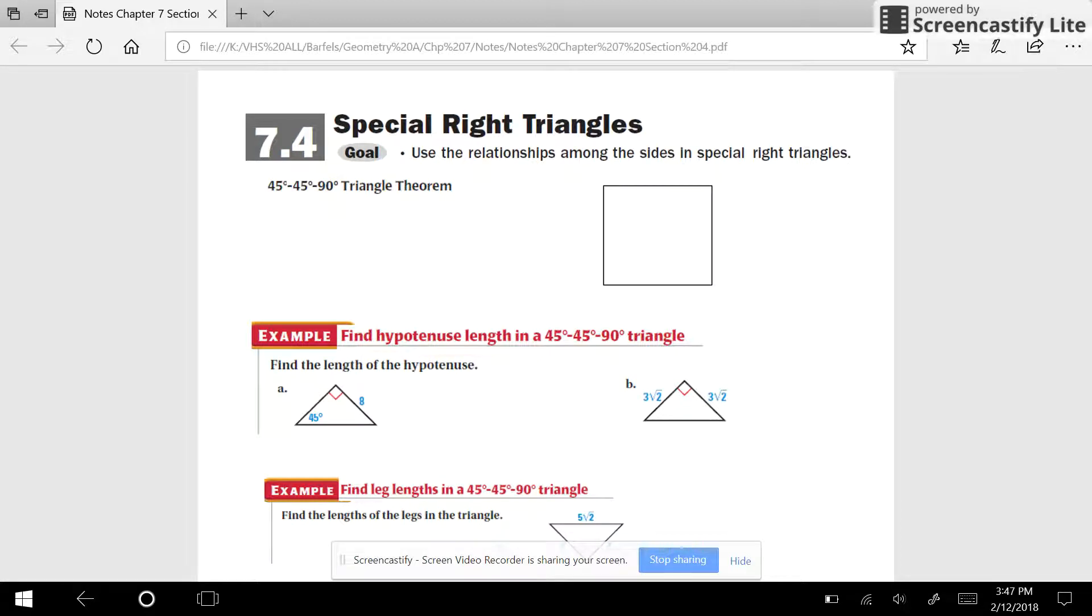All right, so we're going to take a look at 7-4, where we have some special right triangles, and you'll see we have a square here.